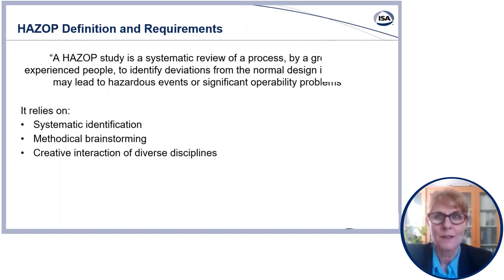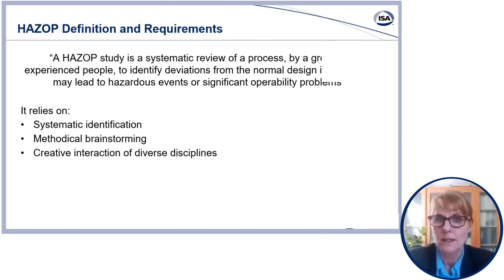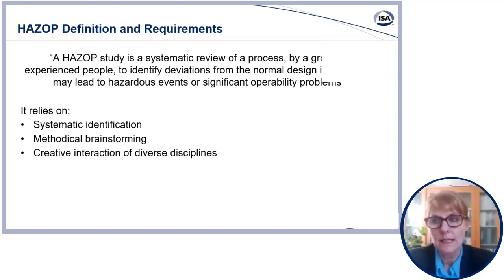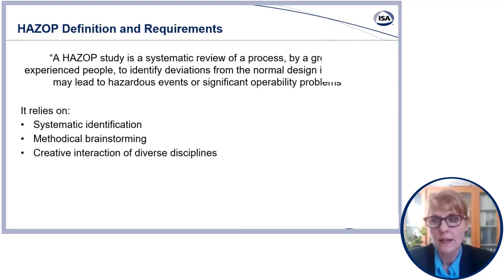HAZOP can be defined as a system to systematically review a process by a group of experienced people in order to identify deviations from the normal design intent, which may lead to hazardous events or significant operability problems. It relies on three major components. The first is that it's a systematic technique used to identify — not always solve — potential hazards and operating problems. The second is that it's conducted by a group of experienced people who methodically assess the process in a brainstorming environment.